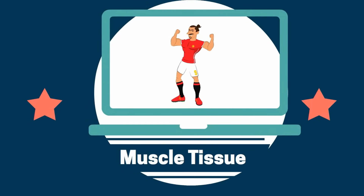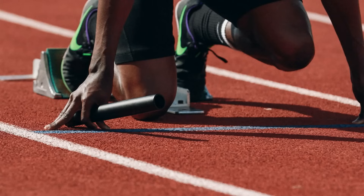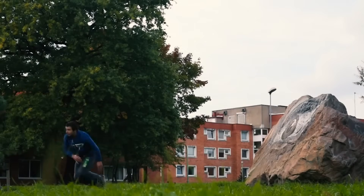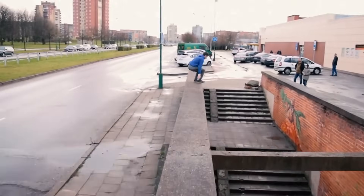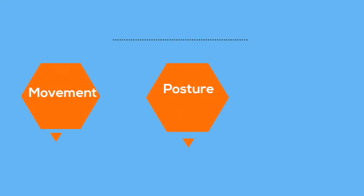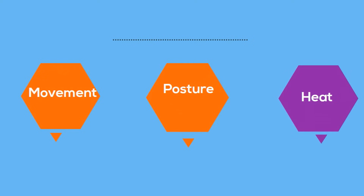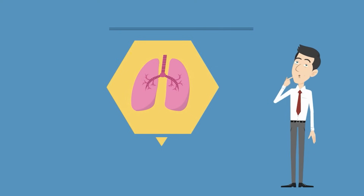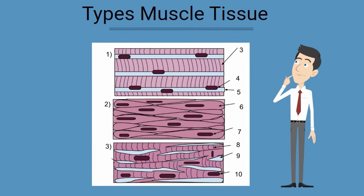Muscle tissue is one type of tissue found in the human body. Muscle tissues are responsible for movement inside and outside of the body. In addition they help with body posture and they also produce heat. Muscle tissues have the ability to contract and get shorter, then relax and return to their original size.